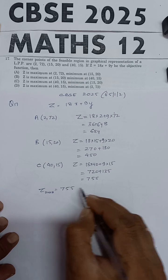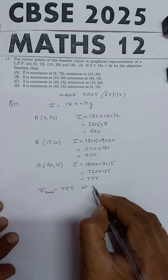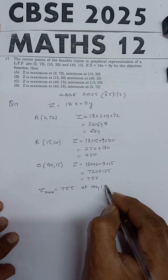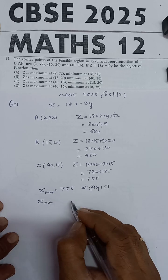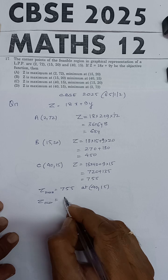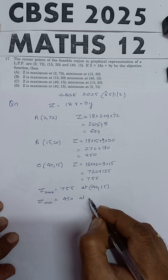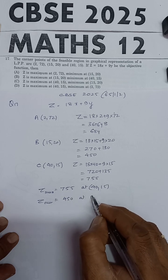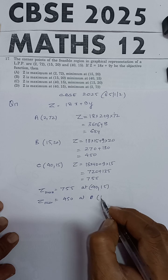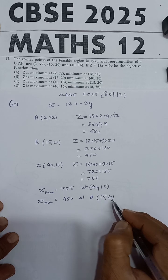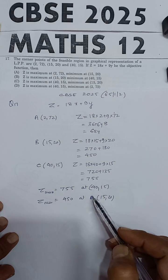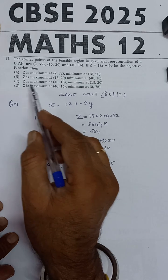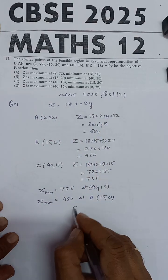And z is minimum with value 450 at B, which is the point (15,20). This corresponds to option C, so option C is the correct answer.